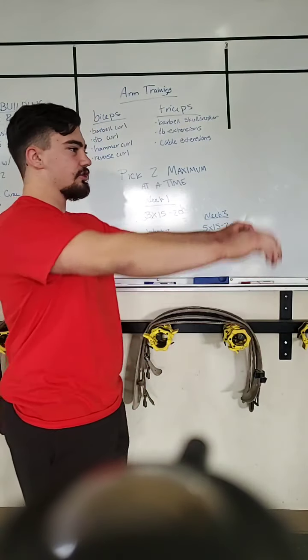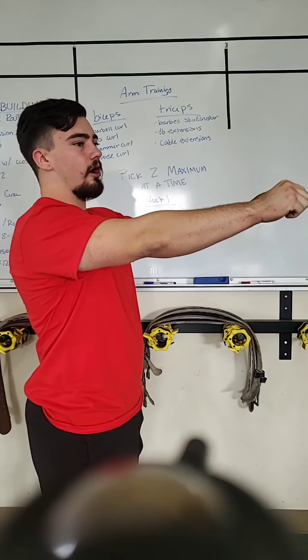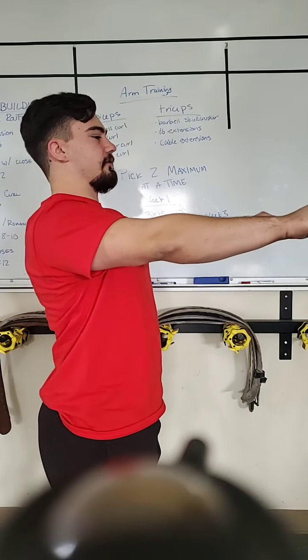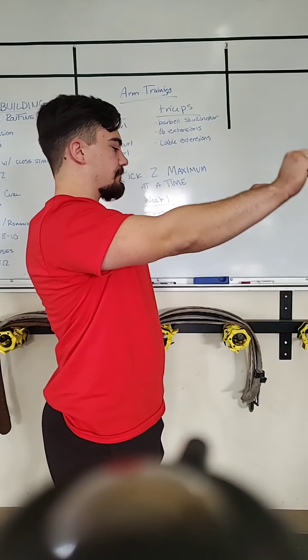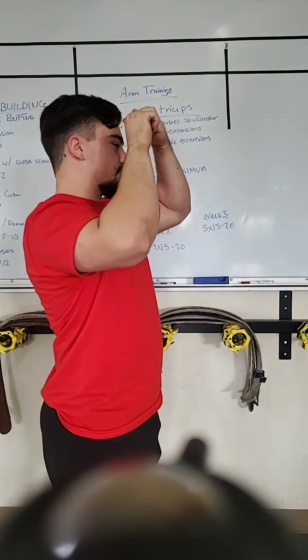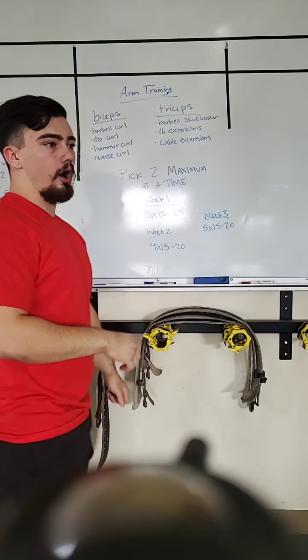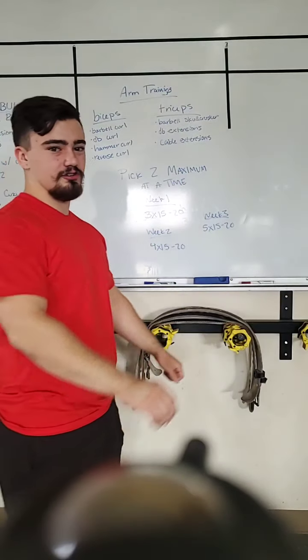A barbell skull crusher is when you take either a curl bar like an easy curl bar or a standard barbell. You hold it above your face like you're going to bench press and you bend your elbows back and touch your forehead with the bar, which is why it's called a skull crusher because you're touching your skull.